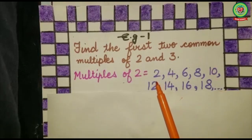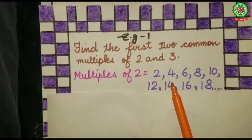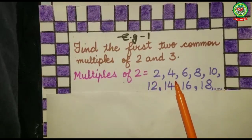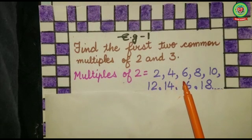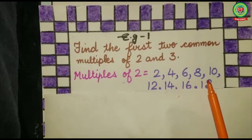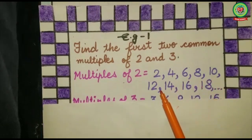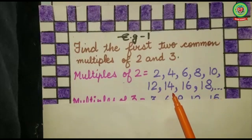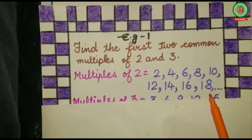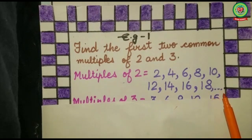Multiples of two are: two, four, six, eight, ten, twelve, fourteen, sixteen, eighteen, and so on.